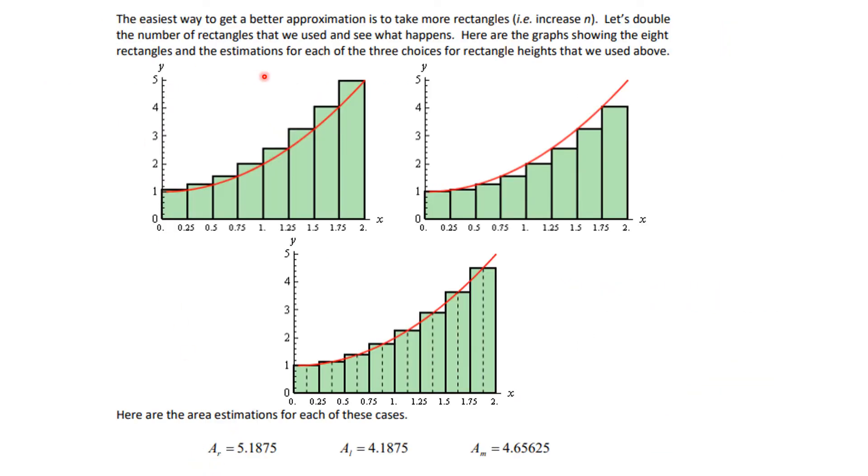Now the easiest way to get a better approximation would be for us to take more rectangles. Increase n. And if your antenna is up you're thinking oh this is going to be kind of like a limit. That's where we're going. So let's double the number of rectangles we use and see what happens. So instead of having 4 we're going to have 8. 1, 2, 3, 4, 5, 6, 7, 8. And that makes our intervals shorter. Each sub interval now is b minus a which is 2 over 8. So each sub interval is 1 fourth. So we get this for the right endpoint estimates, this for the left endpoint estimates, and this for the midpoint estimates.